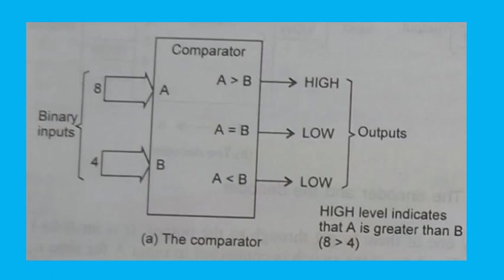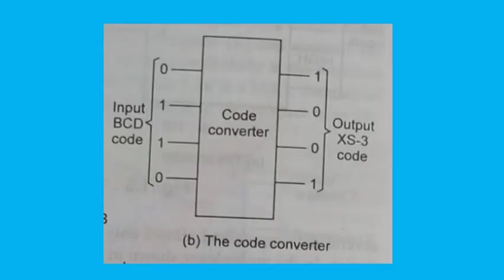A logic circuit used to compare two quantities and give an output signal indicating whether the two input quantities are equal or not, and which of them is greater, is called a comparator. The binary representations of quantities A and B to be compared are applied as inputs. One of the outputs — A>B, A=B, or A<B — goes high depending on the magnitudes of the input quantities. The figure illustrates comparison of 8 and 4, with the result A>B going high.